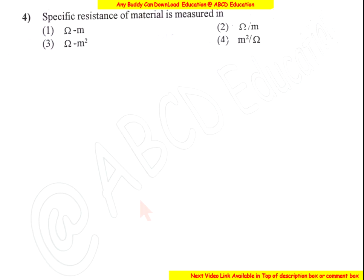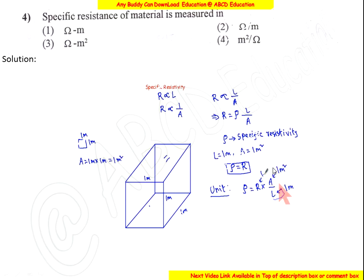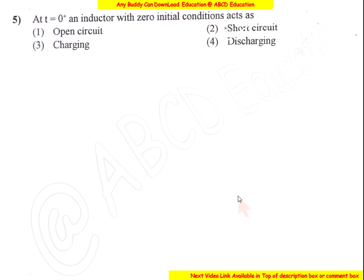Specific resistance of a material is measured using R = ρL/A, where ρ is resistivity in ohm-meters, R is resistance in ohms, A is area in meters squared, and L is length in meters. Therefore the unit of specific resistance is ohm-meter, which is option 1.